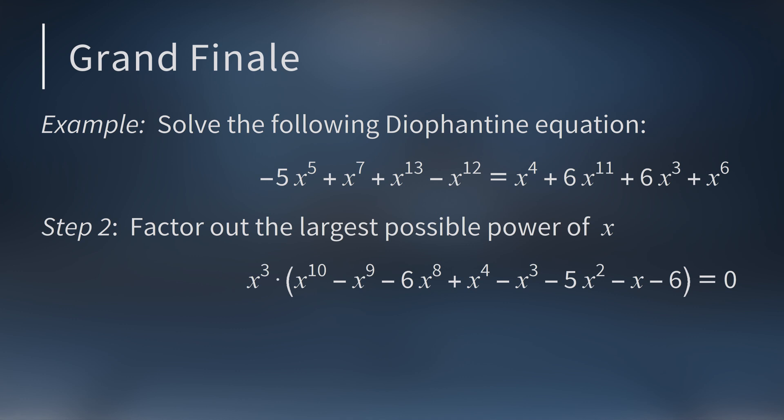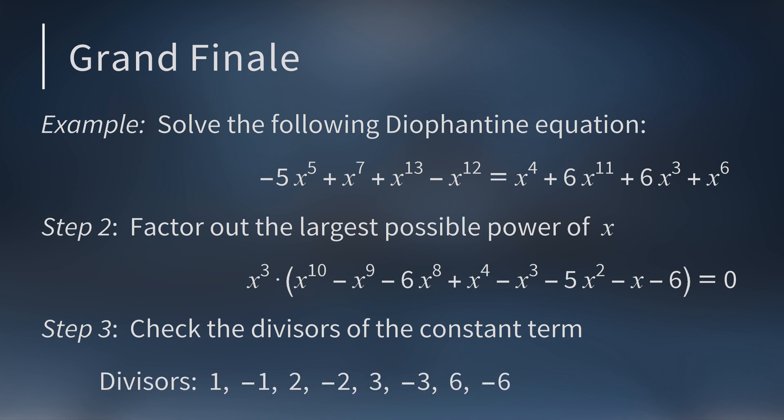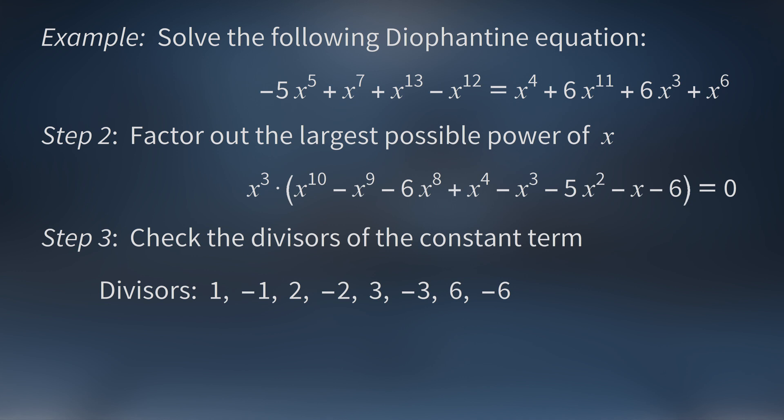And now we want to check the polynomial in parentheses to see if it's ever zero. To do this, we check all the divisors of the constant term -6. There are eight divisors: 1, -1, 2, -2, 3, -3, and 6, -6. If you plug these eight numbers into the second factor, you get these eight values. The second factor is zero when x = -2 or x = 3. So the solutions to the Diophantine equation are x = 0, -2, and 3.